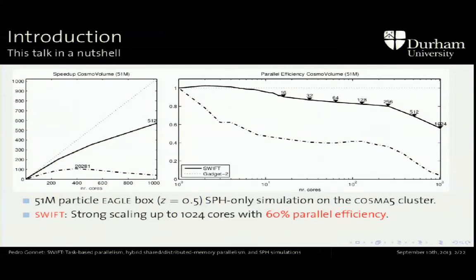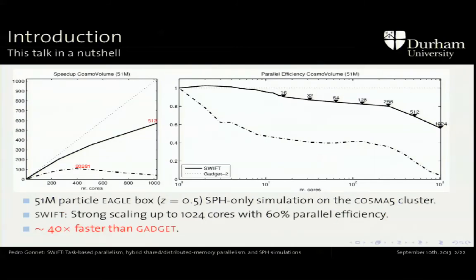The work I'm going to talk about today is a simulation software called Swift. This is the same relative speedup and relative efficiency plot. What we can see is that on a single node with shared memory parallelism, we have 90% parallel efficiency. At 256 cores, we're still at 80% efficiency, and at a thousand cores, we just drop slightly below 60% efficiency. But most importantly, if we compare these two figures, this is the actual milliseconds per time step — we've gone from 20 seconds to half a second. That's 40 times faster than Gadget on the same simulation, the same initial conditions, the same particles doing the same thing on the same hardware.